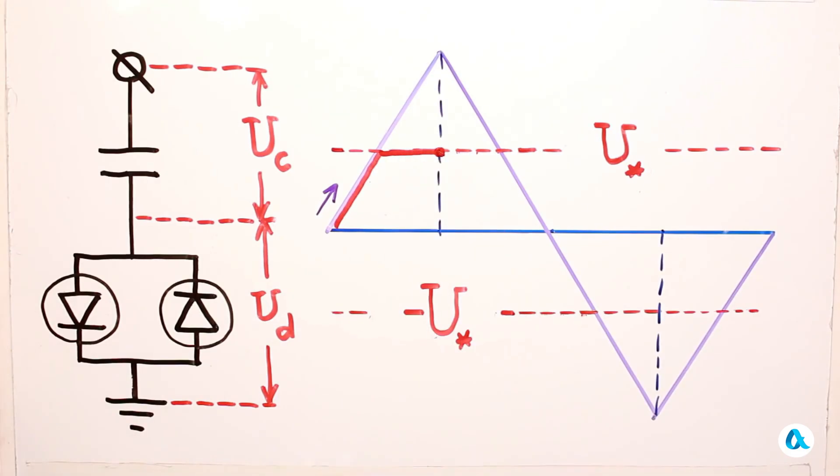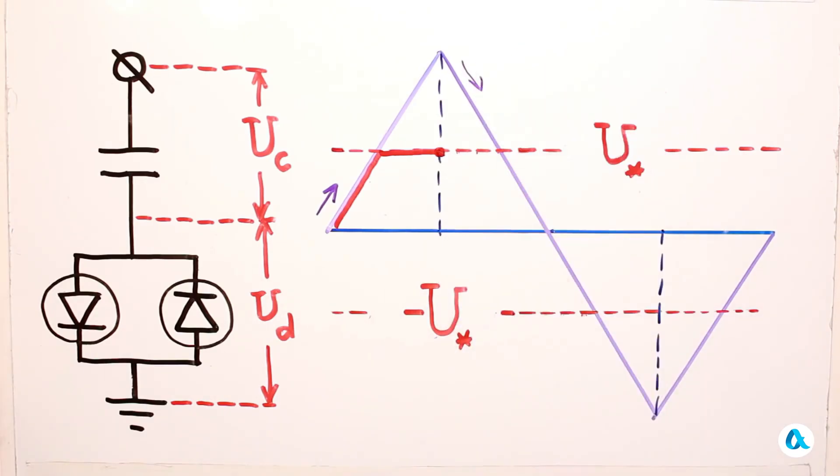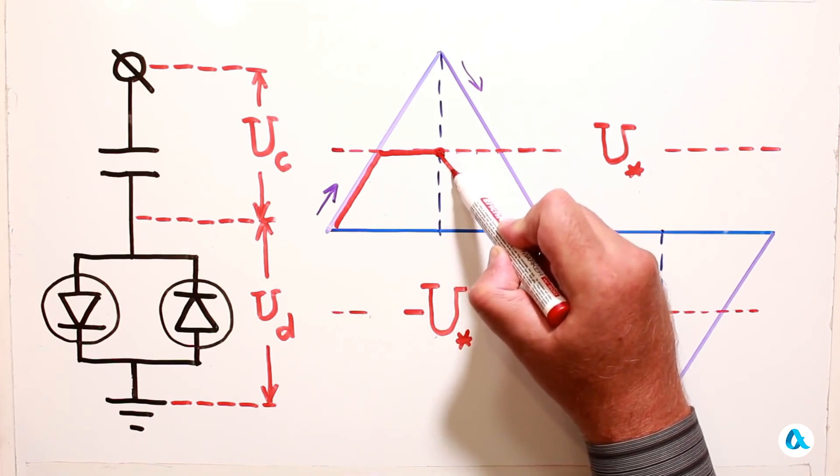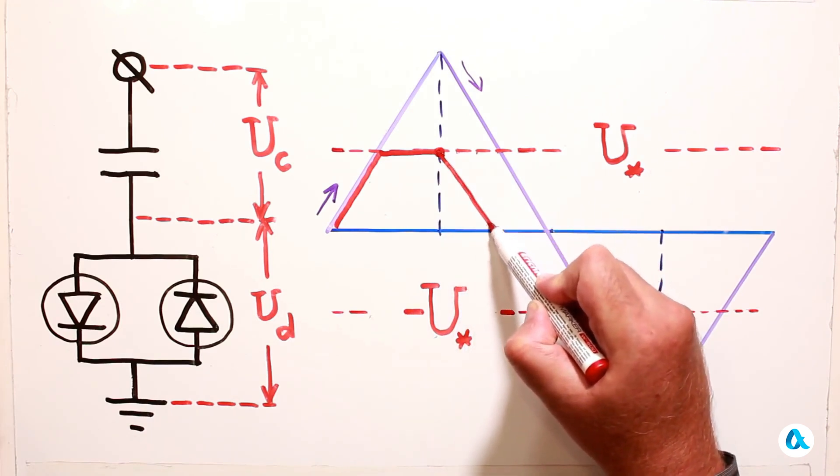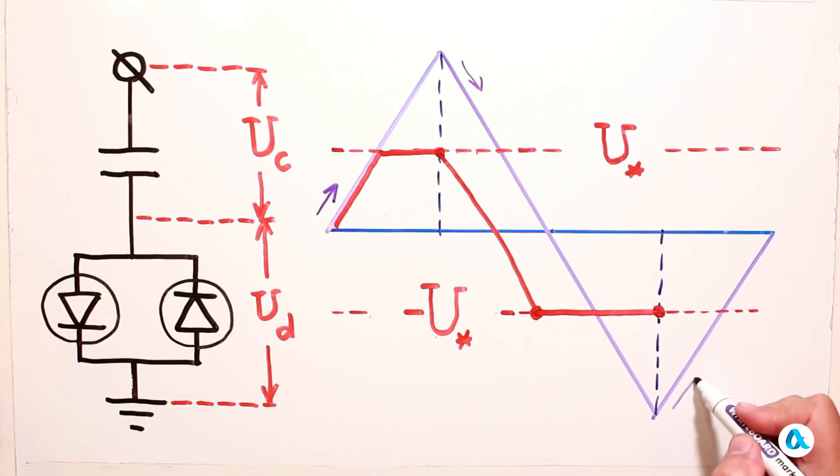Now the total voltage begins to decrease, but the capacitor cannot discharge yet because the current would now have to flow through the other diode and it is currently blocked by a voltage of the opposite polarity. Therefore, the voltage across the capacitor remains constant while the voltage across the diodes drops until the second diode opens. Now the switch is open, the voltage across it is constant, and the capacitor is recharging. This continues until the total voltage reaches its peak value.